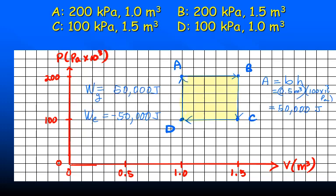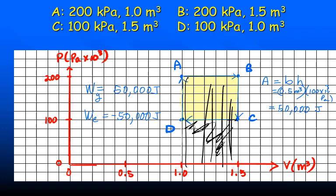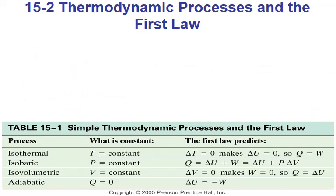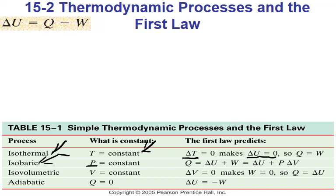Sketching the cycle gives a total net work of 50,000 J — the full area from A to B minus the negative work where volume is decreasing leaves just the enclosed area of 50,000 J. Reviewing the first law of thermodynamics: in an isothermal process temperature stays constant so there's no internal energy change; in an isobaric process, if pressure stays constant, delta U equals Q.